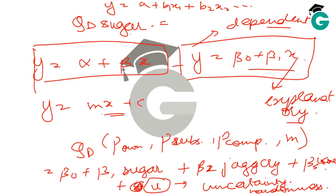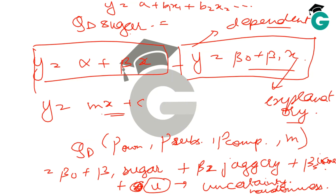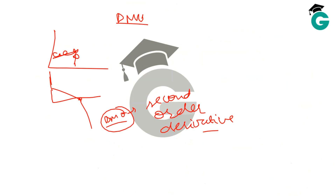The idea of an econometric model is to explain variation in y using variation in x and to test economic theory by building a model using statistical techniques. For example, you might want to test whether the law of demand holds in an empirical sense — and a lot of papers confirm that it does, which is part of why it became a law.